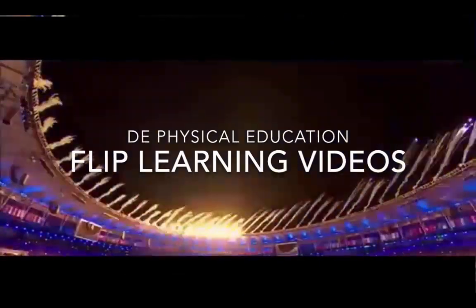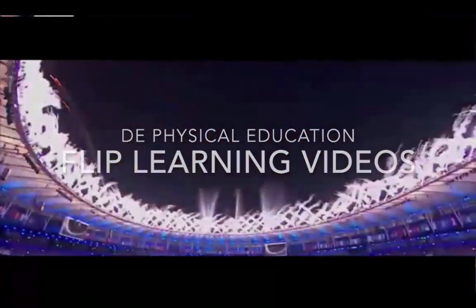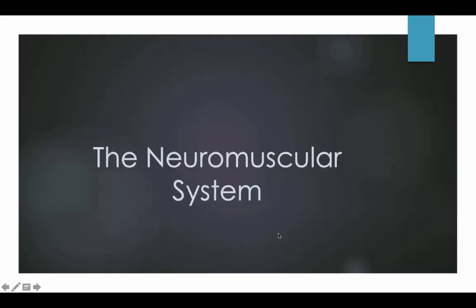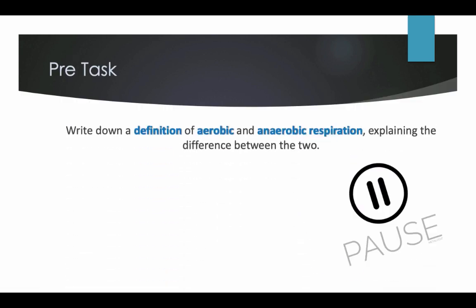Hi and welcome to the DE Physical Education Flipped Learning videos. The Neuromuscular System. Pre-task: before you watch this video, I'd like you to complete the following task. Write down a definition for aerobic and anaerobic respiration, explaining the differences between the two. Pause the video and complete this task.